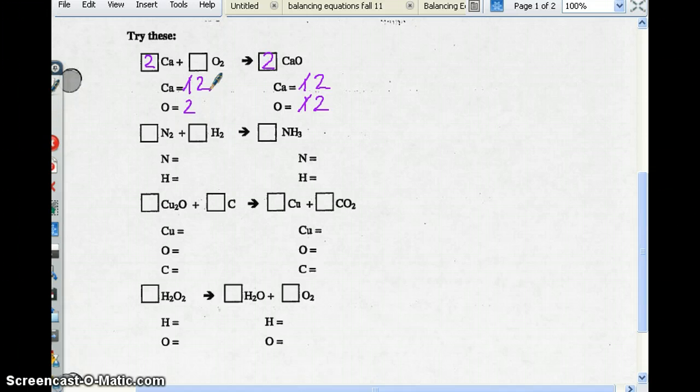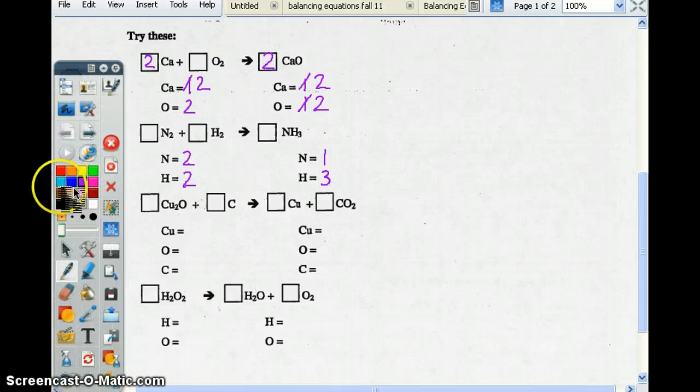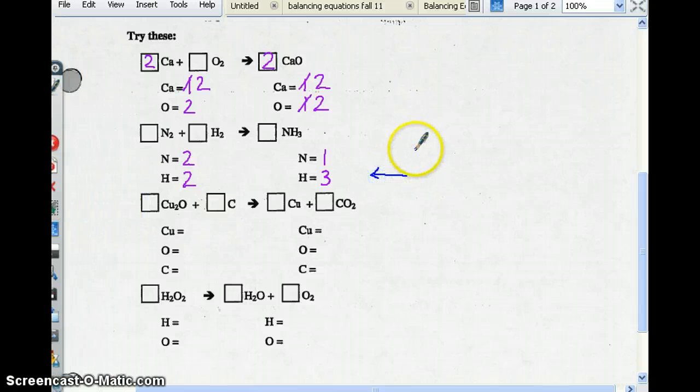So now we're going to get to a little bit of a trickier one. Right here, nitrogen has two, hydrogen has two. Over here, nitrogen has one, and hydrogen has three. Now this is where we have to use our brain slightly, not too complicated. But we are going to start with the one where we have to find a least common multiple, one that's a little bit harder. Because this right here is multiplying by one, and I can multiply anything by one and get a number that I want. However, two and three, I need to find a least common multiple.